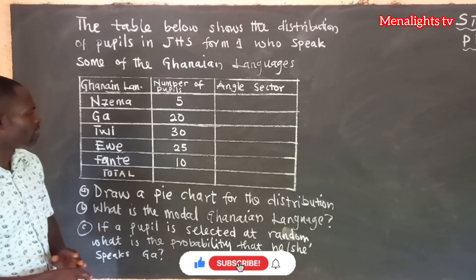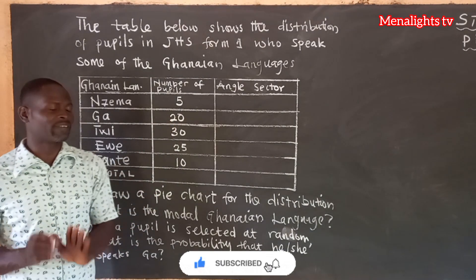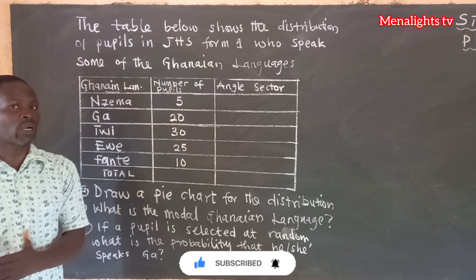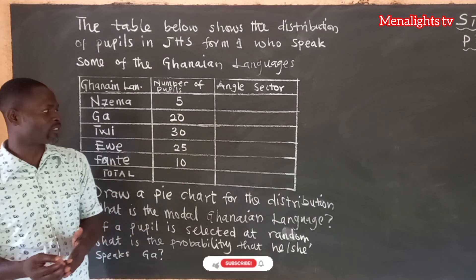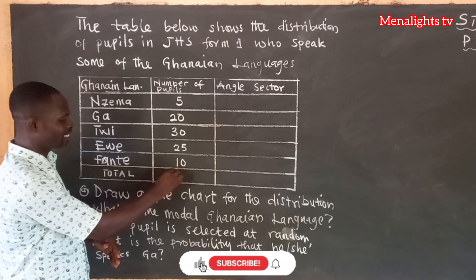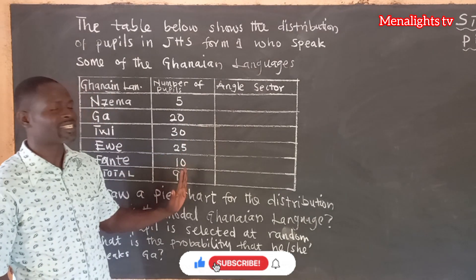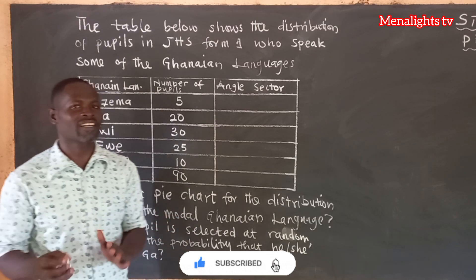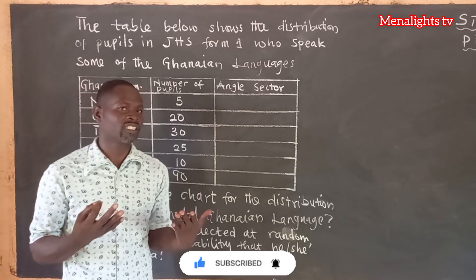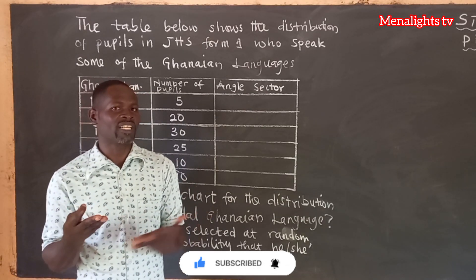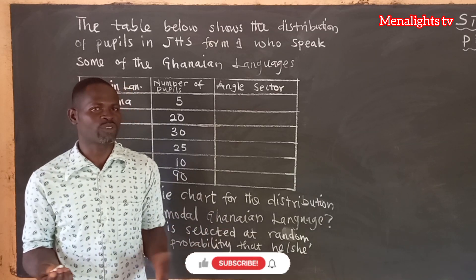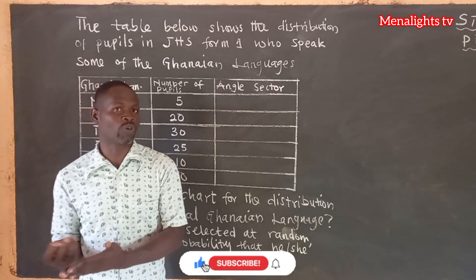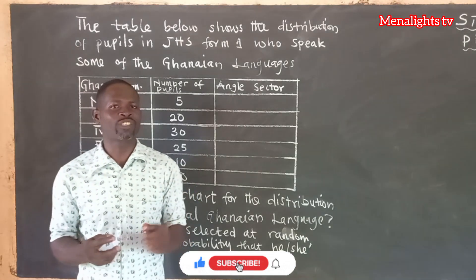Before we can draw the pie chart, the first thing we have to do is find the total number of students who speak the Ghanaian languages. When we add all of these, we get 90. So the total number of students is 90. For us to find the angle sector, we know that a full circle is 360 degrees, so we are going to divide 360 by the total number of people to know the angle sector of each language spoken.